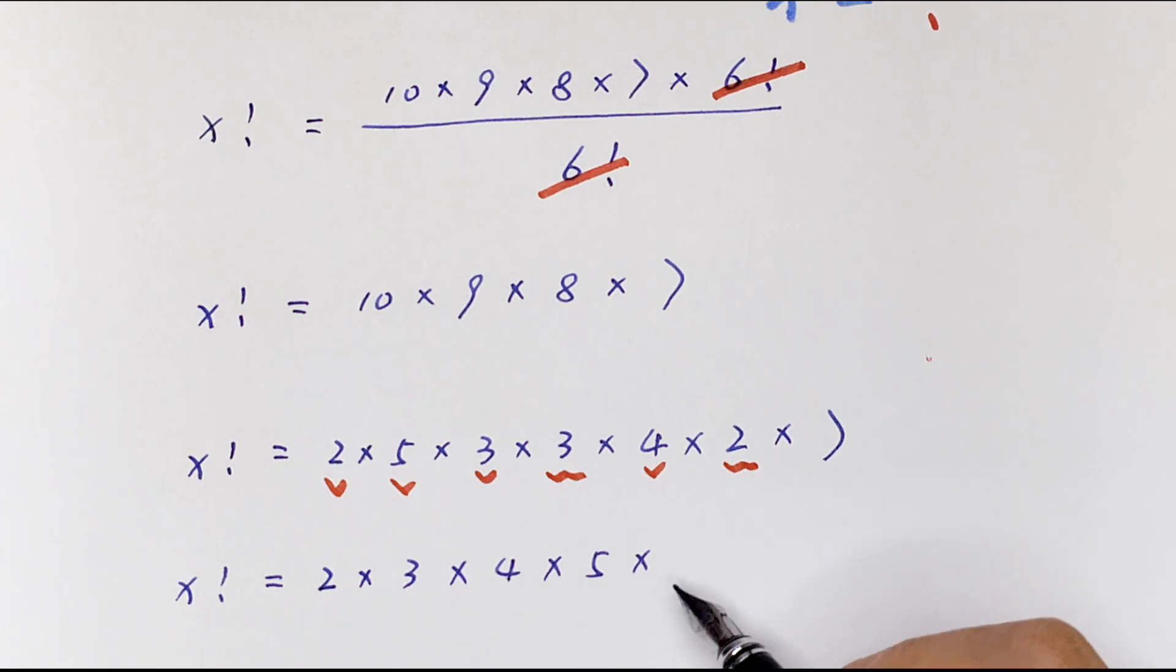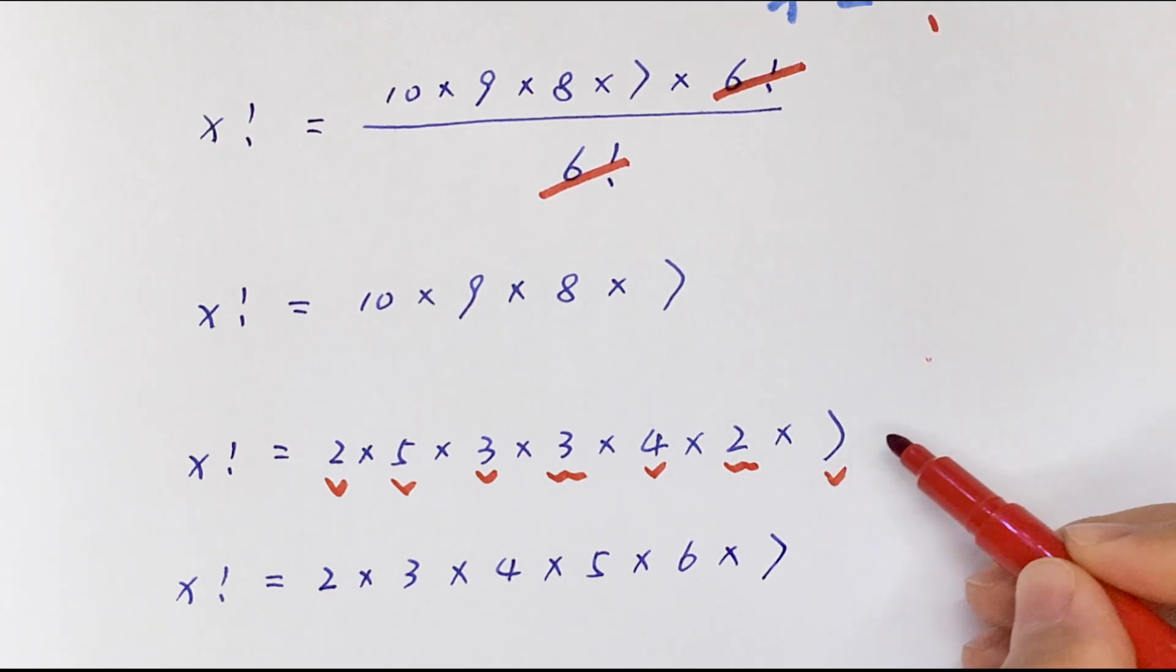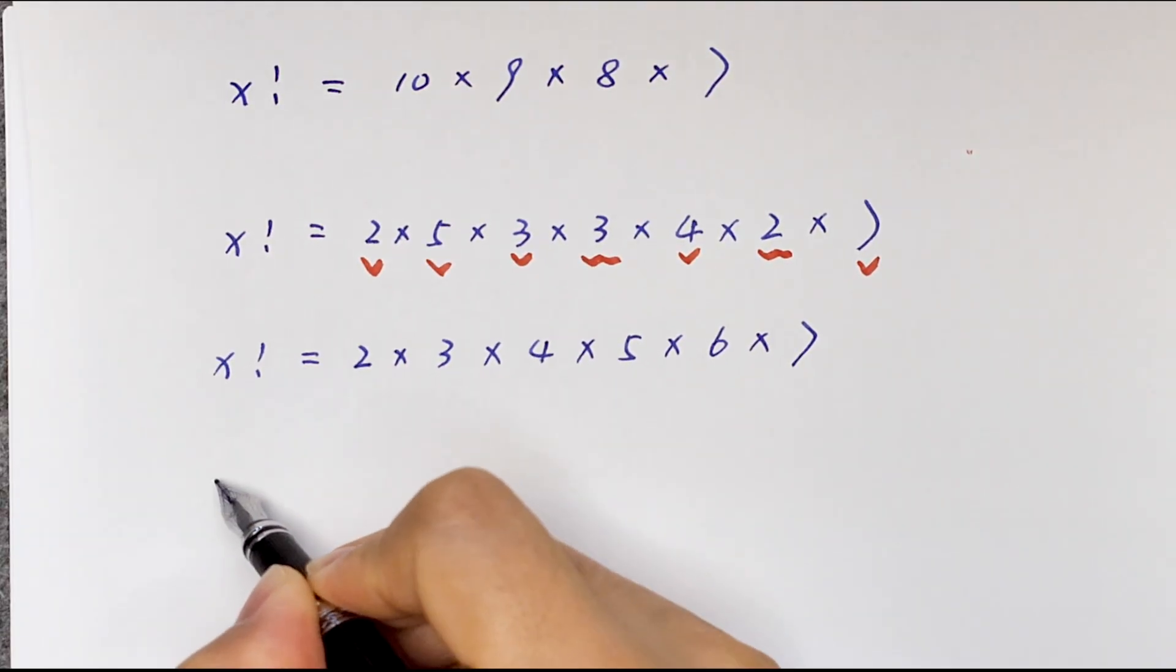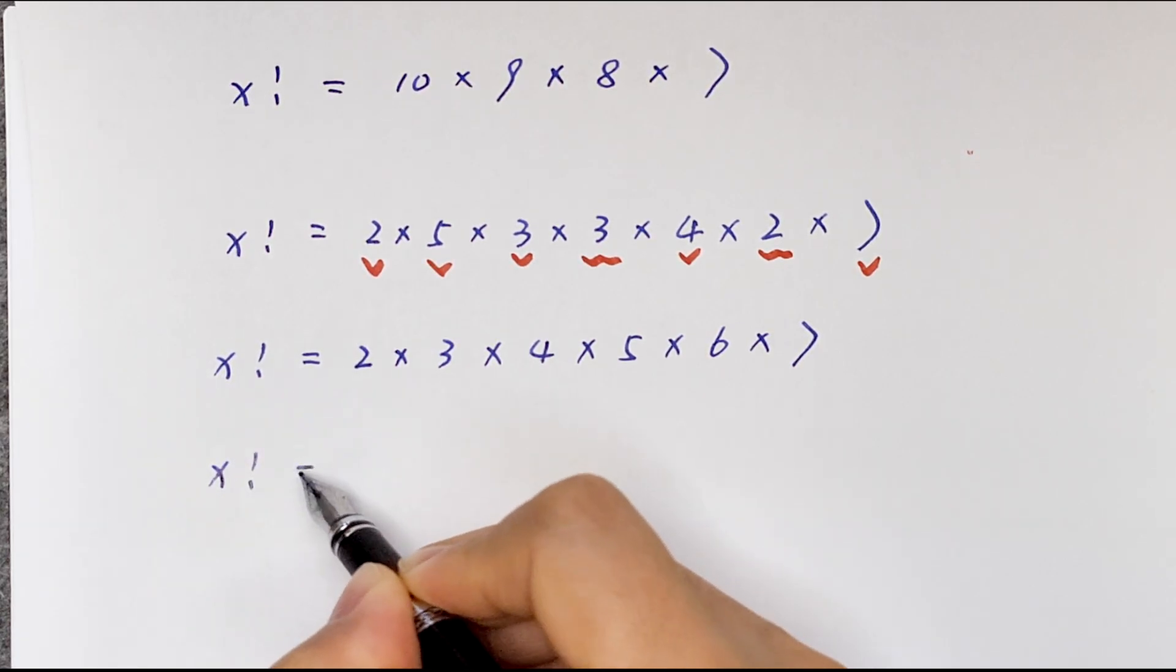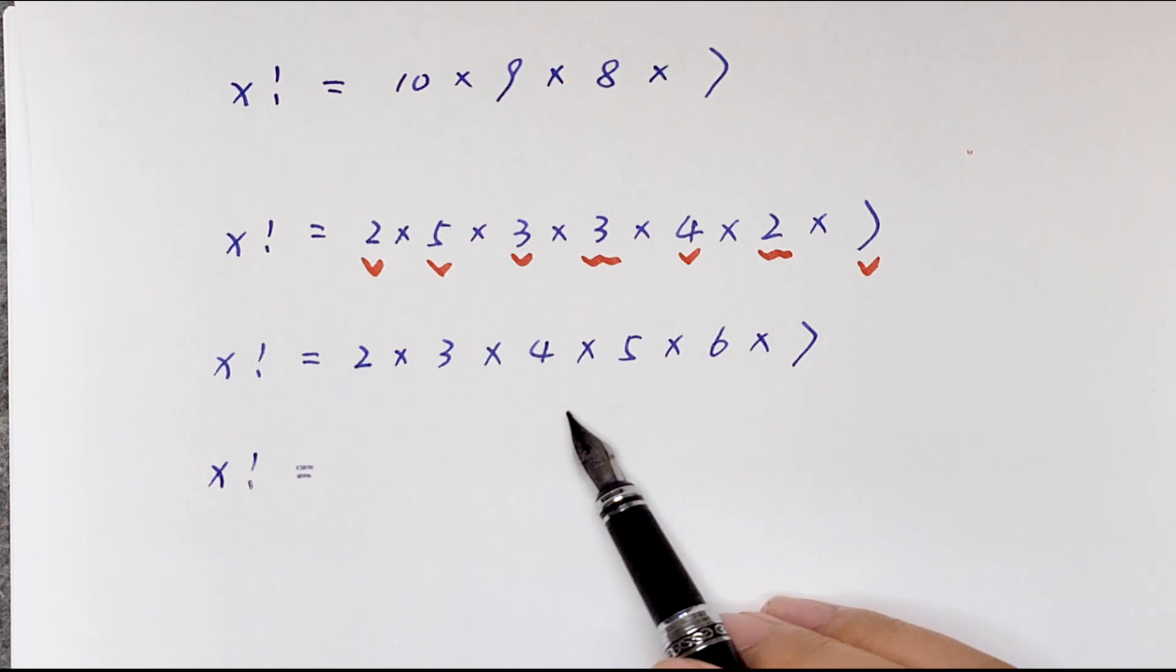So x factorial is equal to, we know, 2 times 3 times 4 times 5 times 6 times 7.